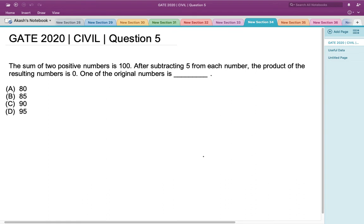Hello everyone, this is a question asked in GATE 2020 Civil Engineering Set 1. The sum of two positive numbers is 100. After subtracting 5 from each number, the product of the resulting numbers is 0. One of the original numbers is...